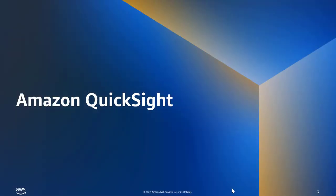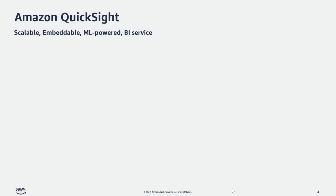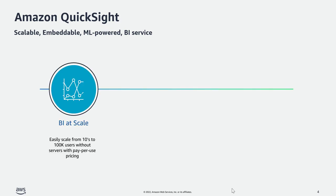So what is Amazon QuickSight? Amazon QuickSight is a scalable, embeddable, ML-powered BI service — business intelligence at scale. Because it was born in the cloud, it is easy to scale from tens to hundreds and thousands of your users without having to manage any servers, and you still pay for only what you use.